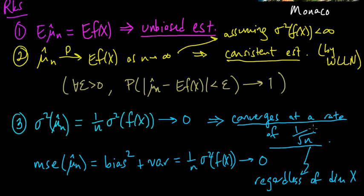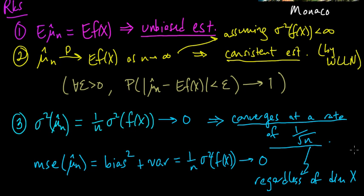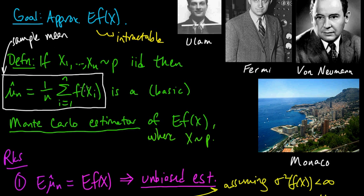One thing to note is that while we have this rate of convergence, it might be difficult to know the actual error, because evaluating the variance of f(x) might be even more intractable than the original expectation — so knowing your actual error can be a disadvantage of Monte Carlo methods. As a practical matter, one also needs to be able to sample efficiently from the distribution in order to make this work in practice.